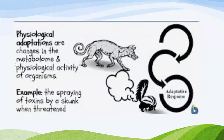Physiological adaptations are changes in the metabolic and physiological activity of an organism. For example, the spraying of toxins by a skunk when threatened — that is called a physiological adaptation.